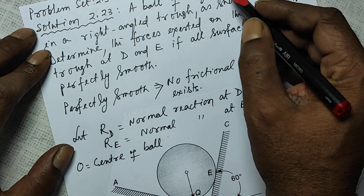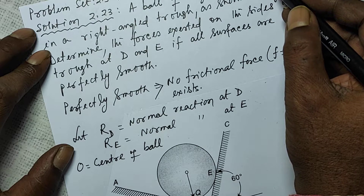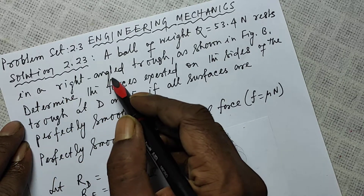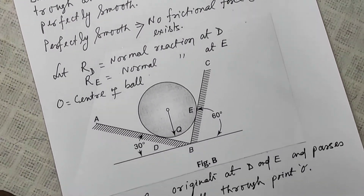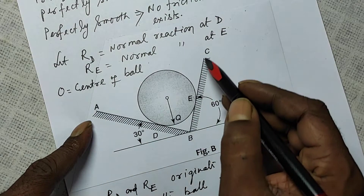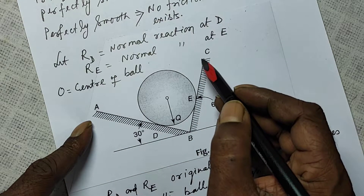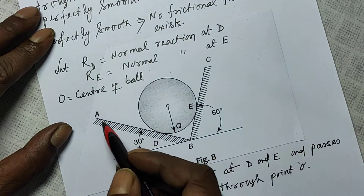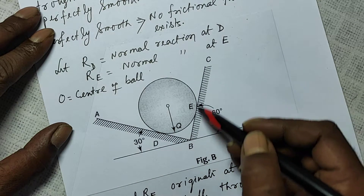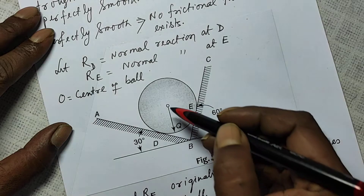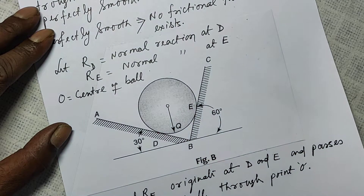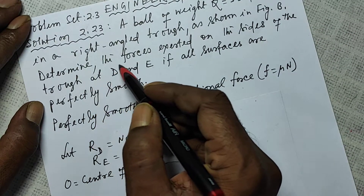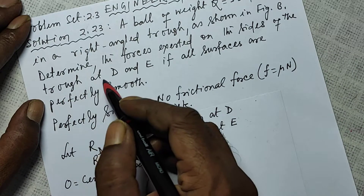A ball whose weight Q is equal to 53.4 Newton rests in a right-angled draw. The angle ABC is 90 degrees. The ball is resting on that draw, touching one side at point D and the other side at point E. The weight acts vertically downward as shown in the figure. Determine the forces exerted on the sides of the draw at D and E.